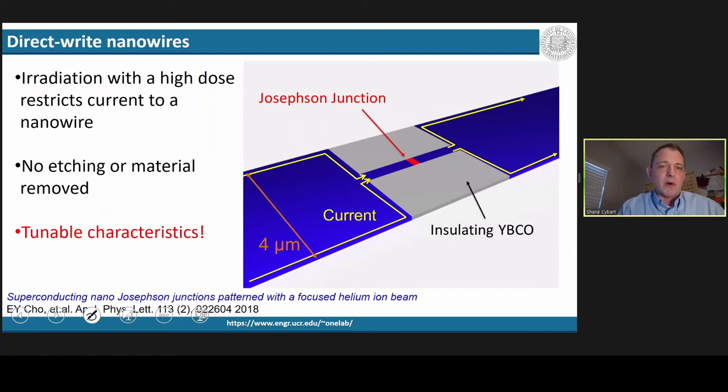So what we developed is an approach to create nanowires in the material by using the same beam that we used to make the Josephson junction to irradiate the side banks. And what this does is shrink down the conductor into a nanofilament and gives us extremely tunable characteristics for our Josephson junctions.